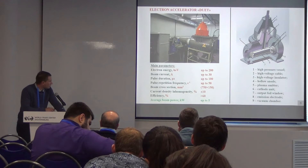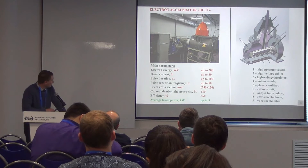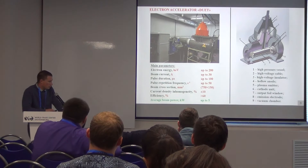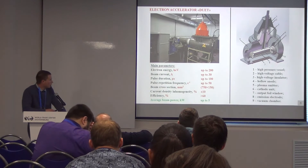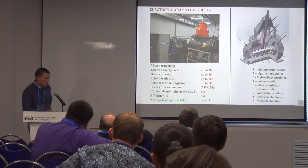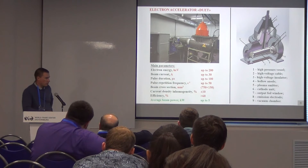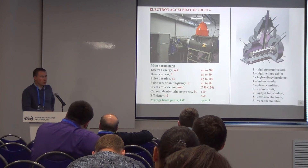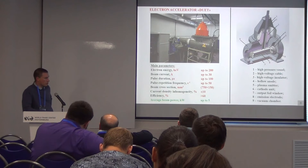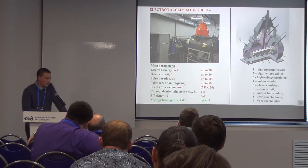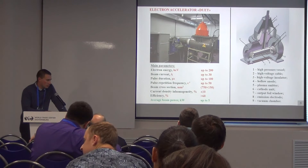We experimentally checked this method in an electron accelerator with a plasma cathode based on low-pressure arc discharge with beam output into the atmosphere. The working stability improves, the probability of electrical breakdown of the accelerating voltage decreases, and the probability of failure of the output foil decreases as well.